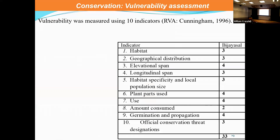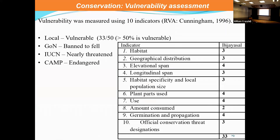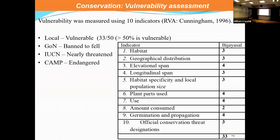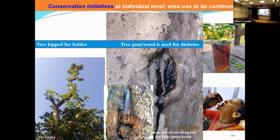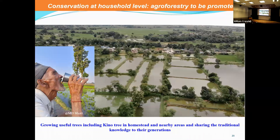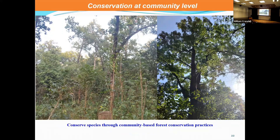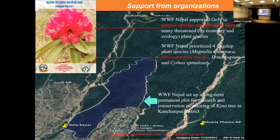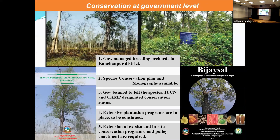A vulnerability assessment found this species is vulnerable, and it is also categorized as threatened according to IUCN and the government list. Conservation initiatives being carried out include promoting wise use, promoting agroforestry practices such as growing Kino in homestead areas, and continuing community forestry programs so the species can be conserved effectively. Conservation organizations have prepared conservation plans and set up permanent plots for research. At the government level, a number of initiatives have been taken and need to be continued.